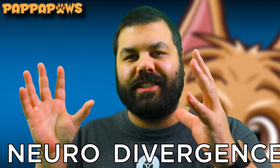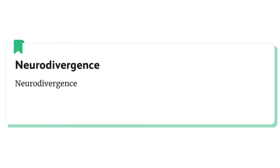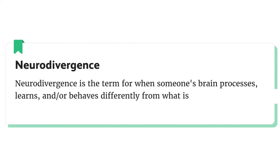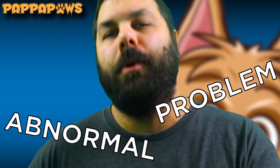So what does this term mean? What does neurodivergence mean? It's actually rather simple. Neurodivergence is a term for when someone's brain processes, learns, and behaves differently than what is typical. Before, neurodivergence was actually looked at as abnormal or a problem. But in today's society, that thinking has shifted. Before we go into the term of neurodivergence, we need to get a basic understanding of the history and how this term came about.